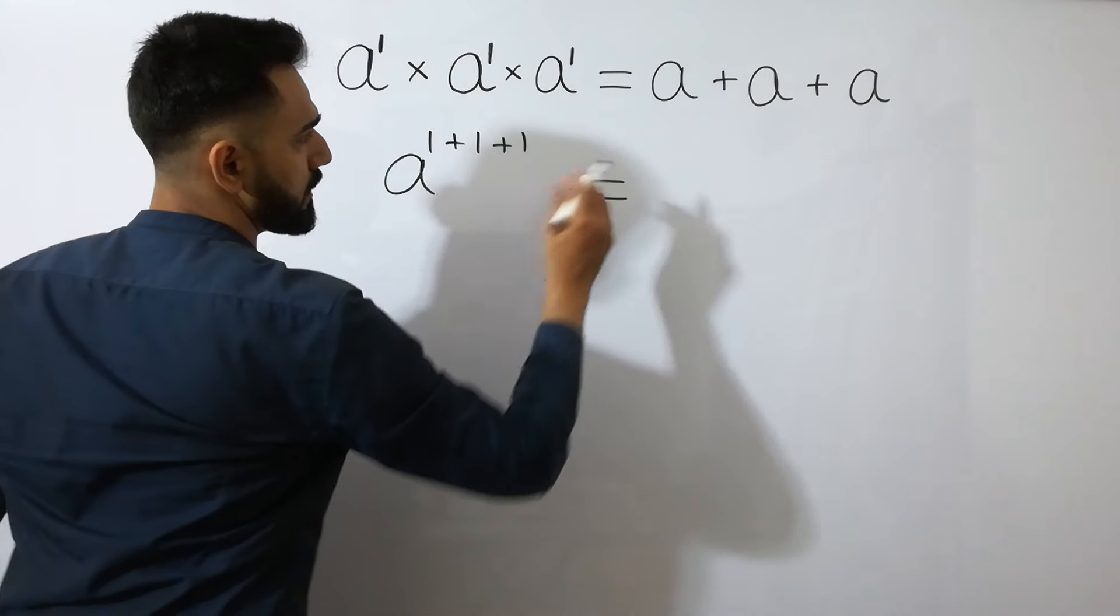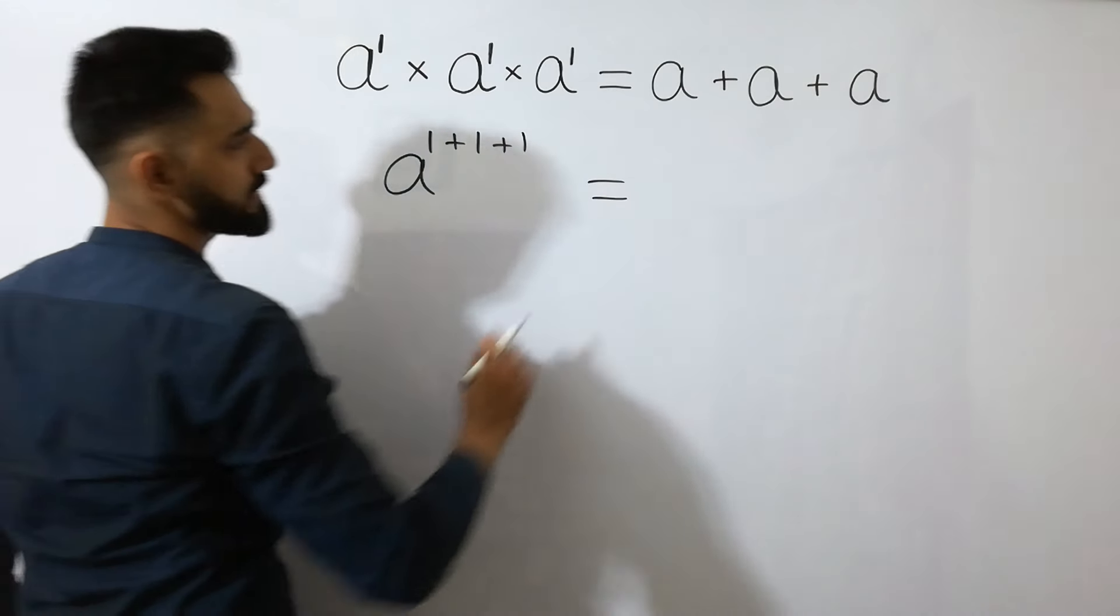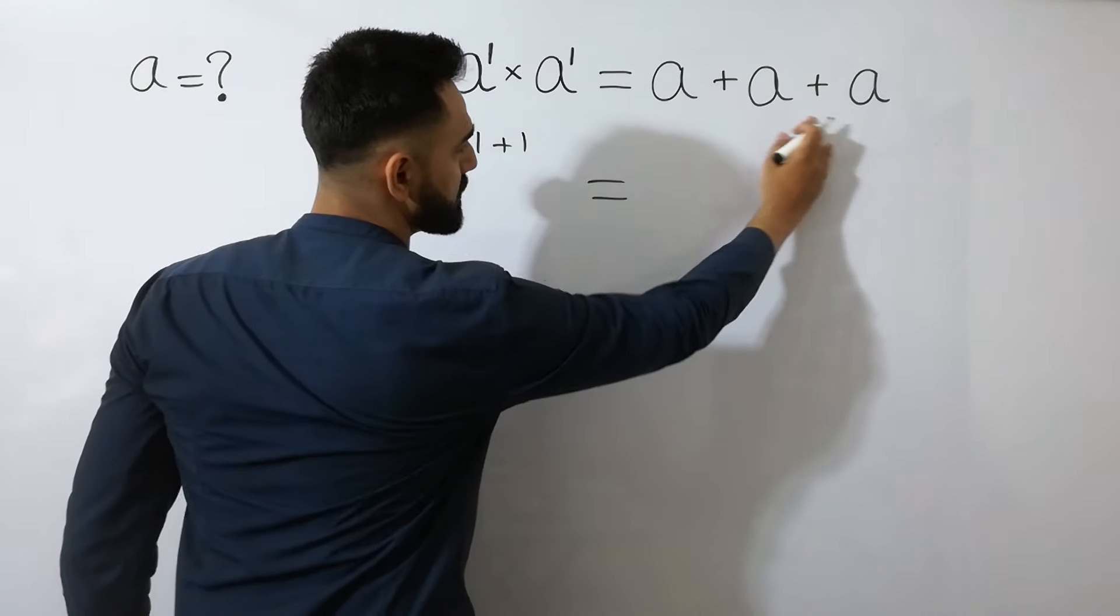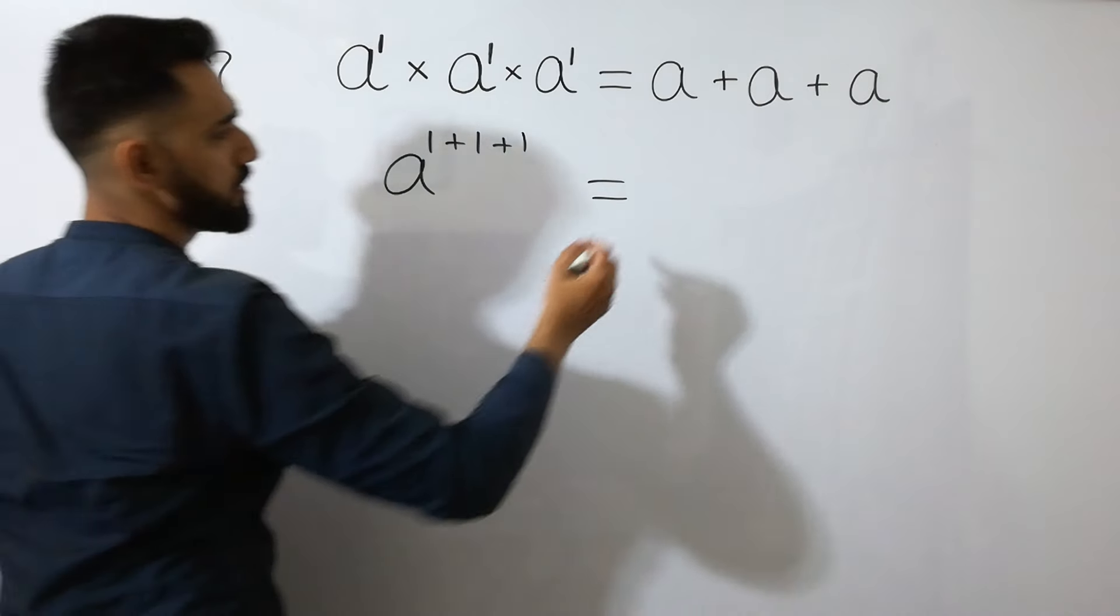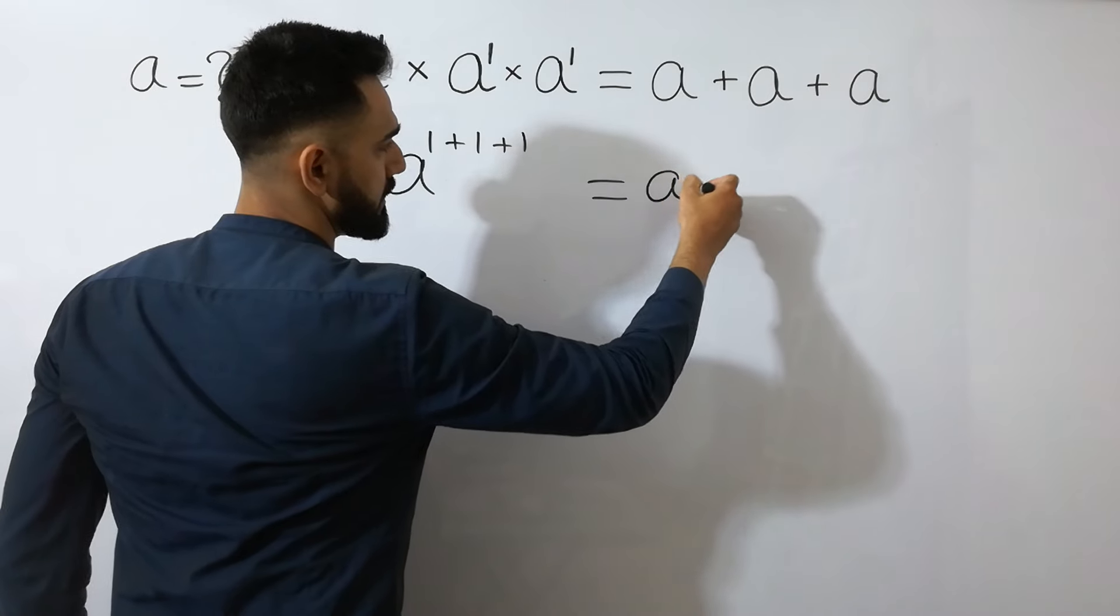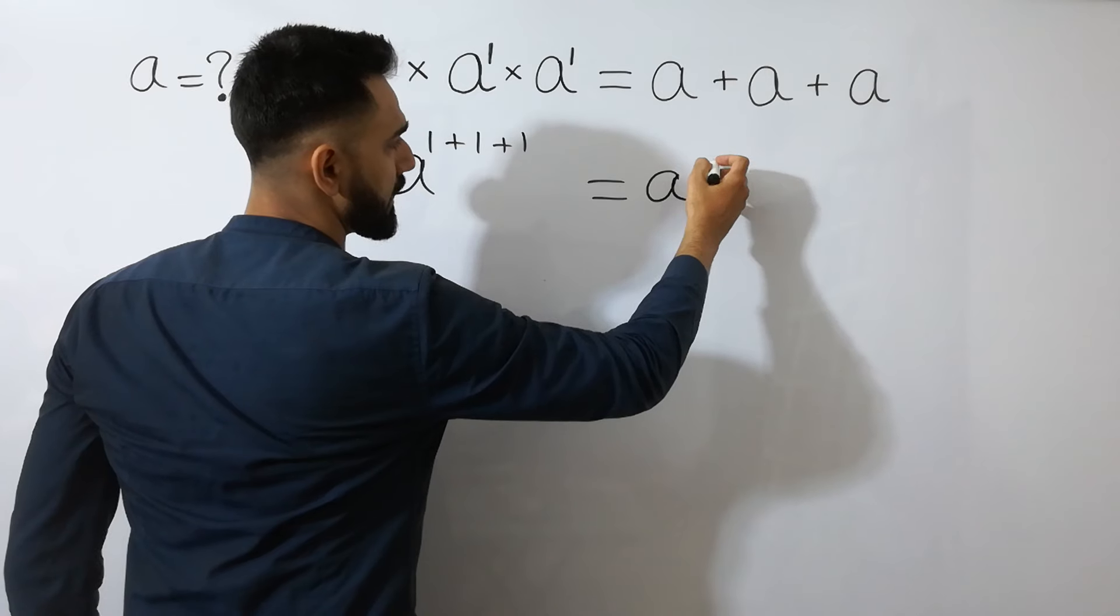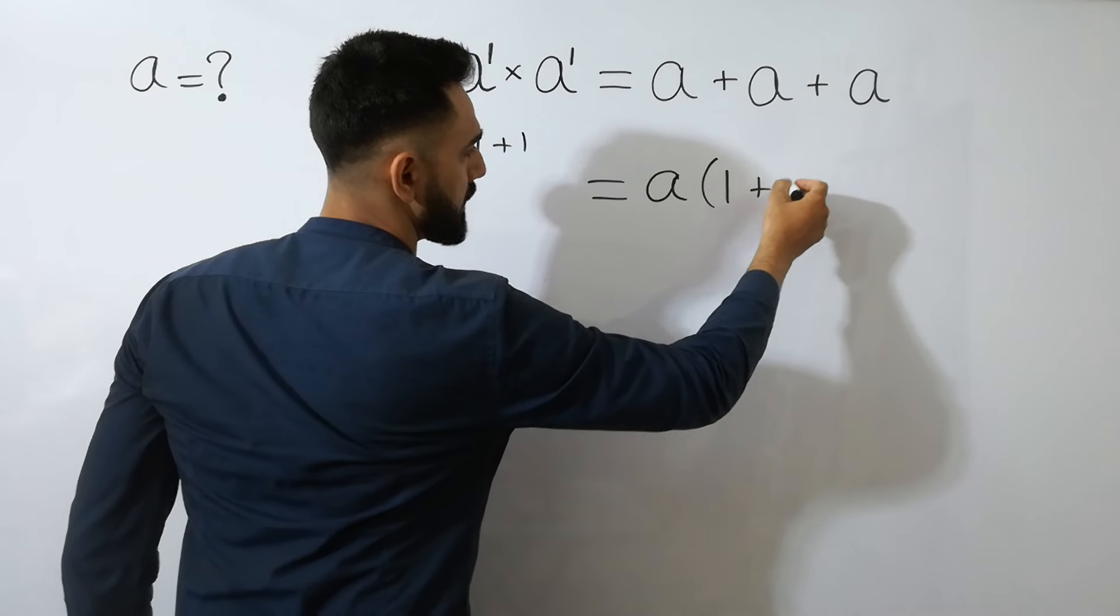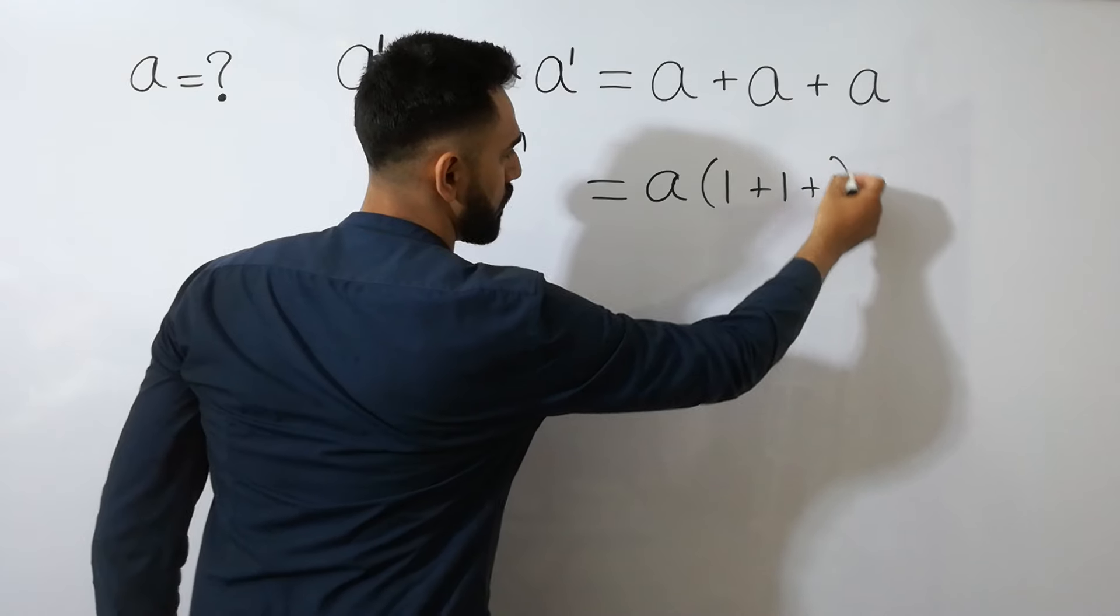Clear? On right hand side, you can see these values of A are same. So we can common here, the value of A, we will get 1 plus 1 plus 1.